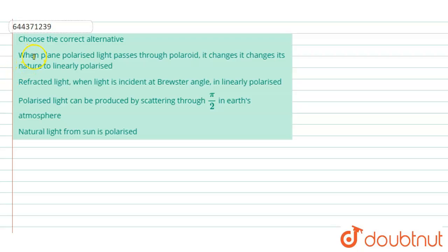Let us try to solve the given problem. The problem states that we have to choose the correct alternative from these four options. Option number one states: when a plane polarized light passes through a polaroid, it changes its nature to linearly polarized.